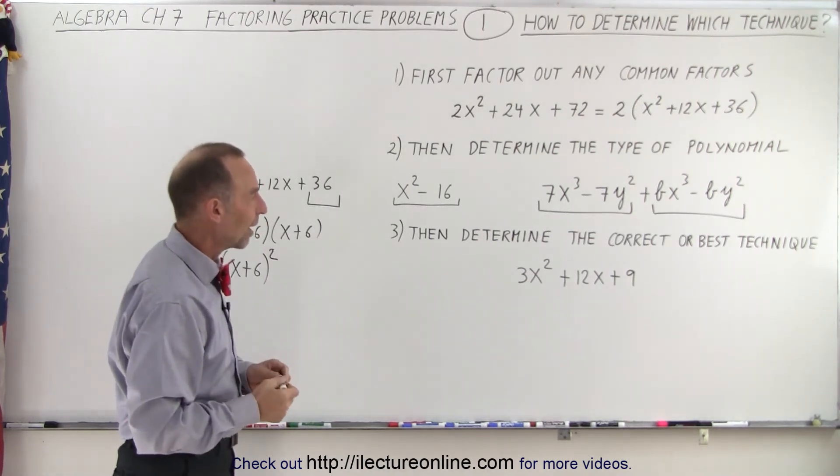Here's a last example. Again, can you factor out a common factor? 3, 12, 9, yes we can factor out a 3. So let's do that first. We end up with 3 times x squared plus 4x plus 3.